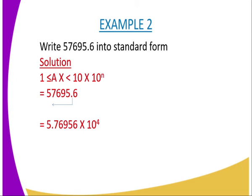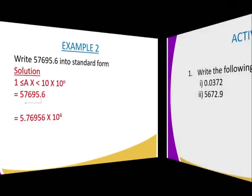The power becomes positive 4, because whenever the decimal point is shifting toward the left, the power must become positive. The answer becomes 5.76956 times 10 to power positive 4.